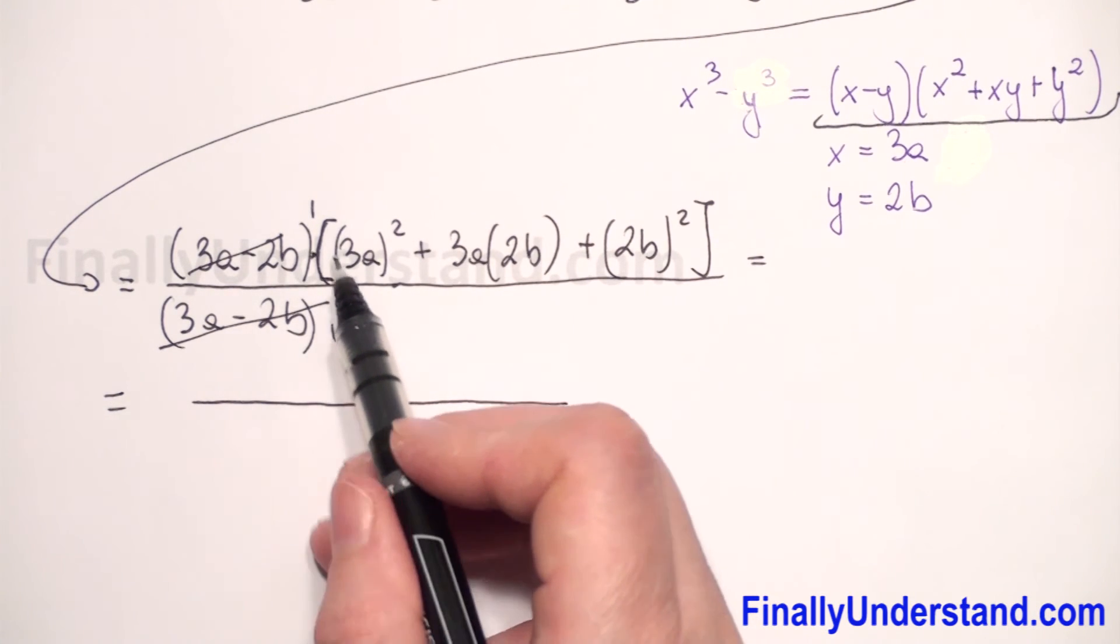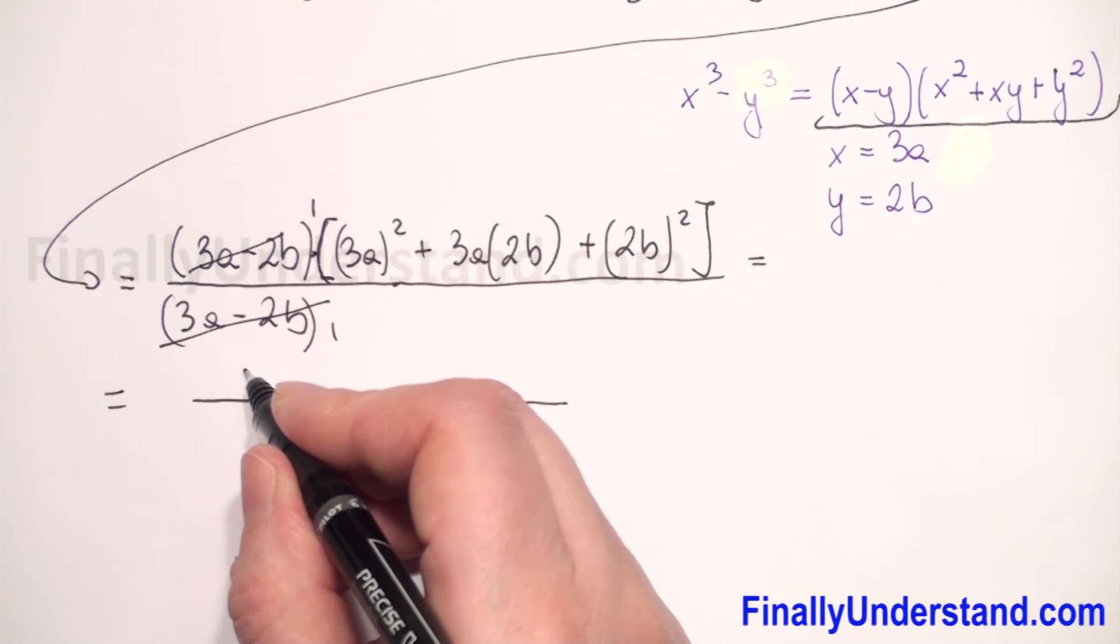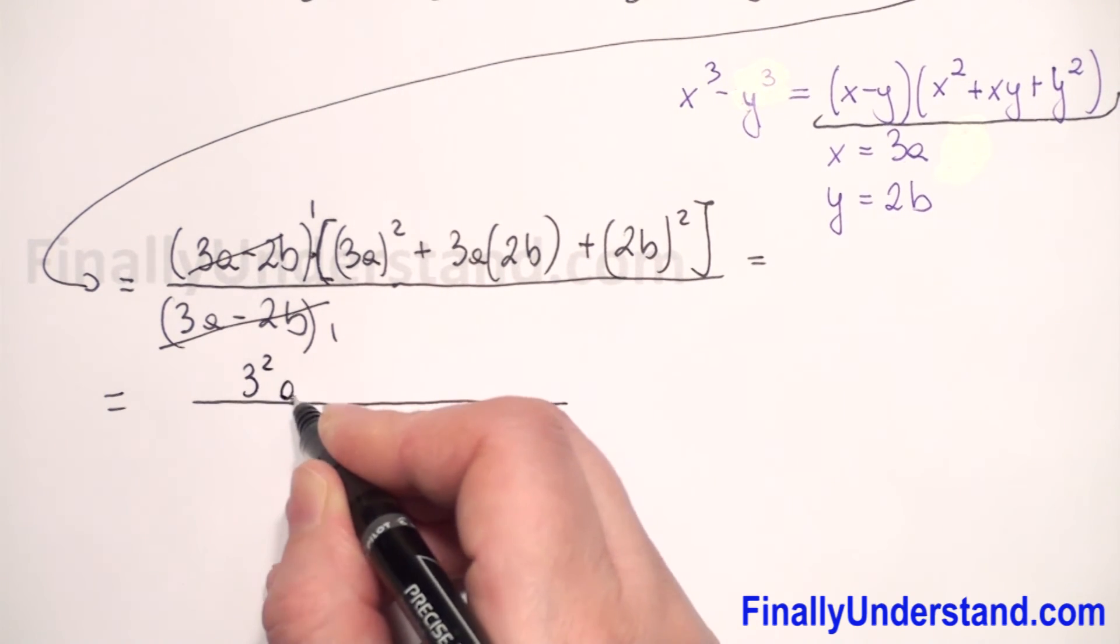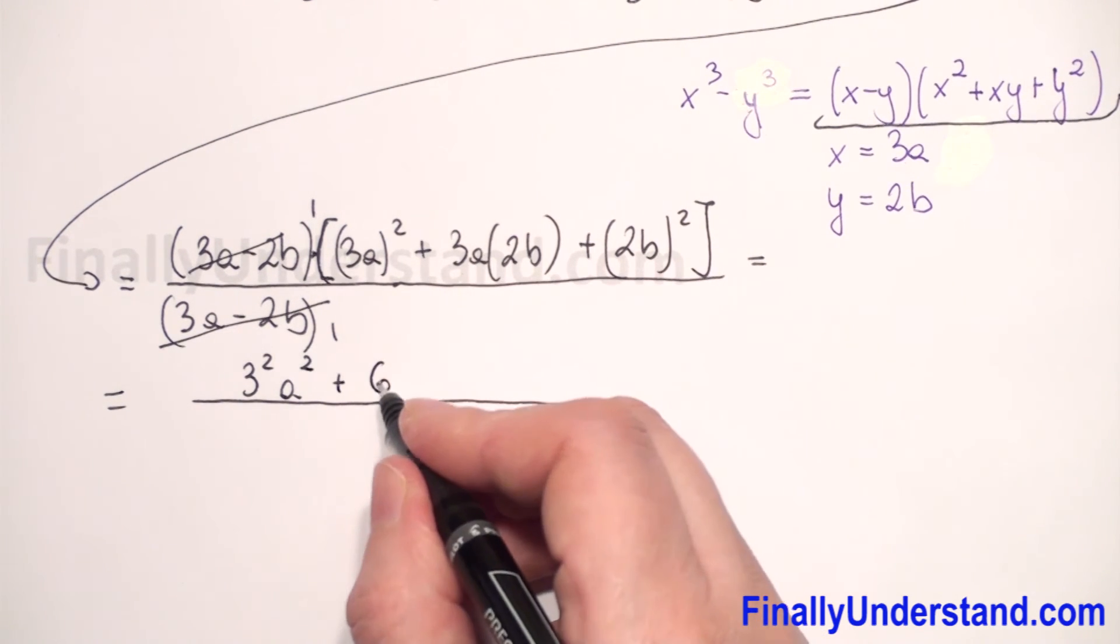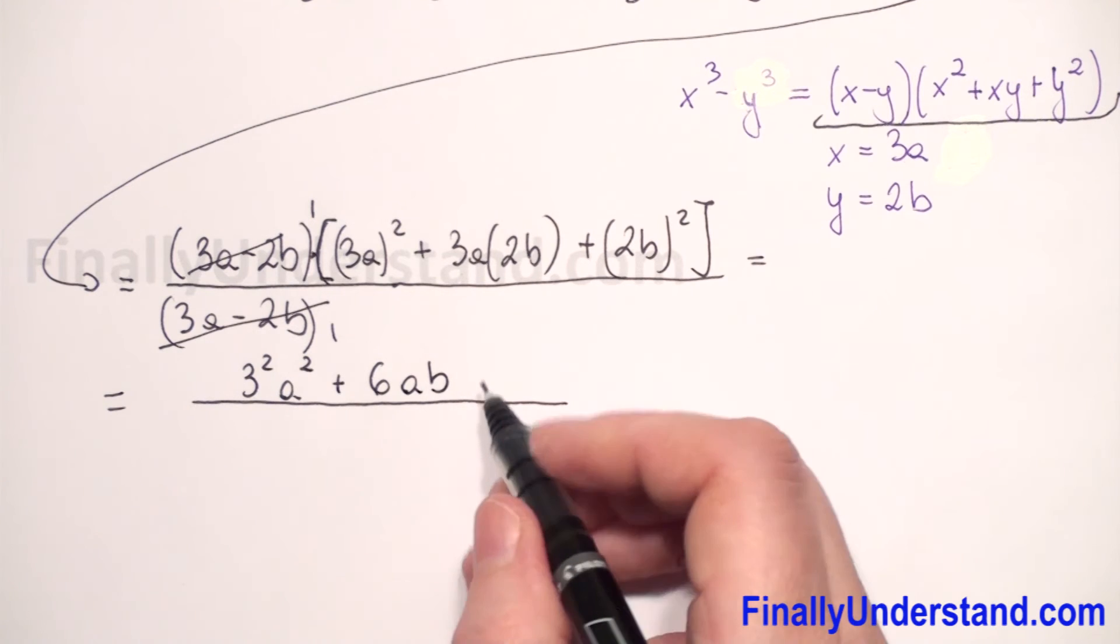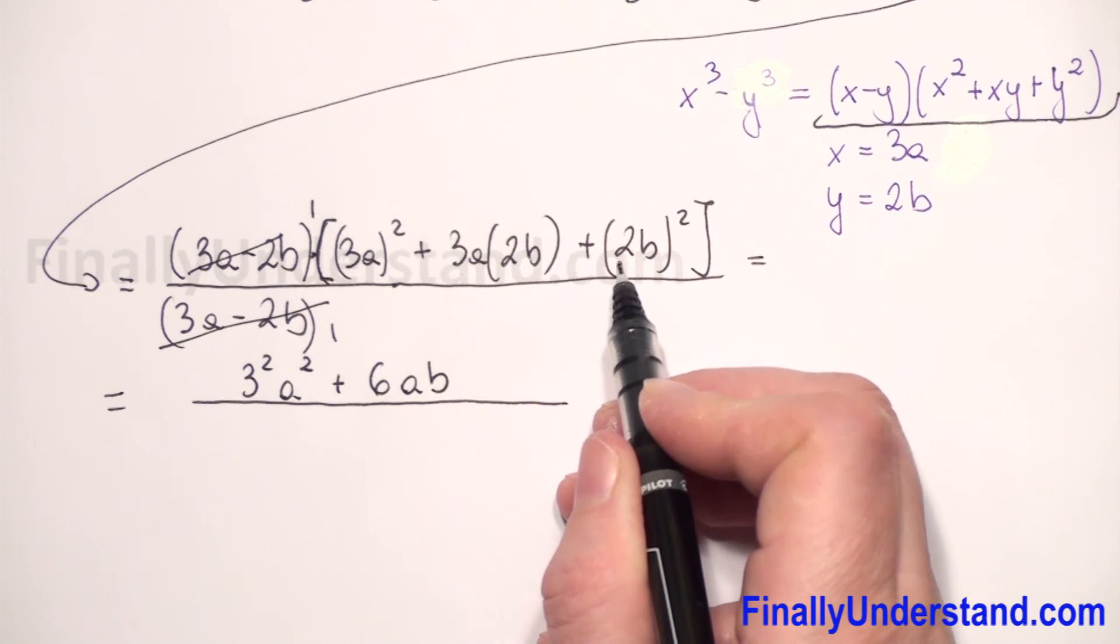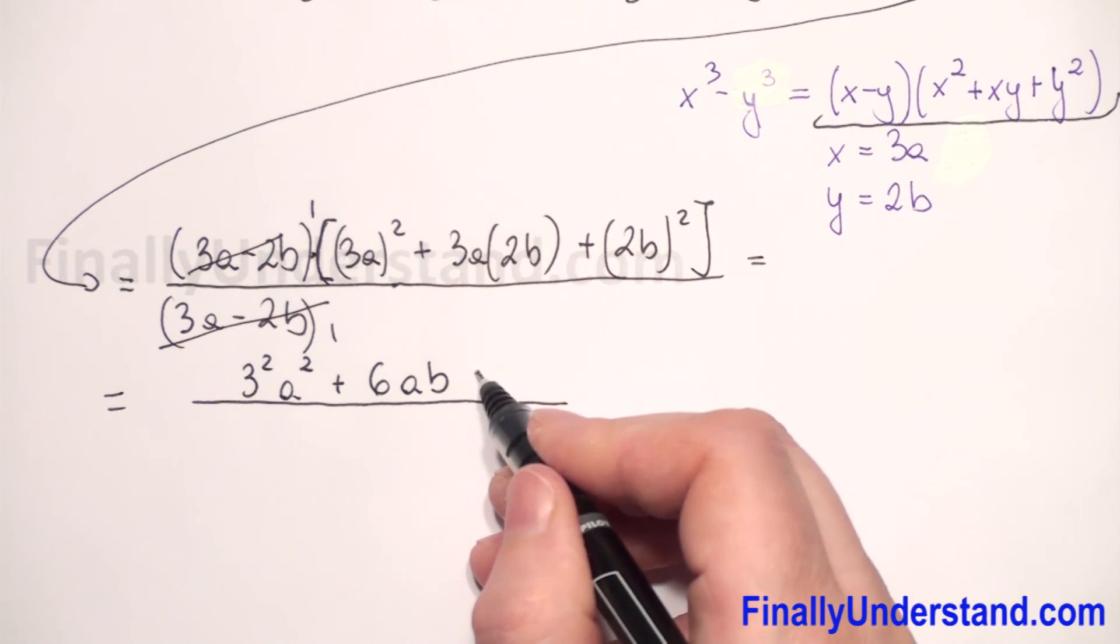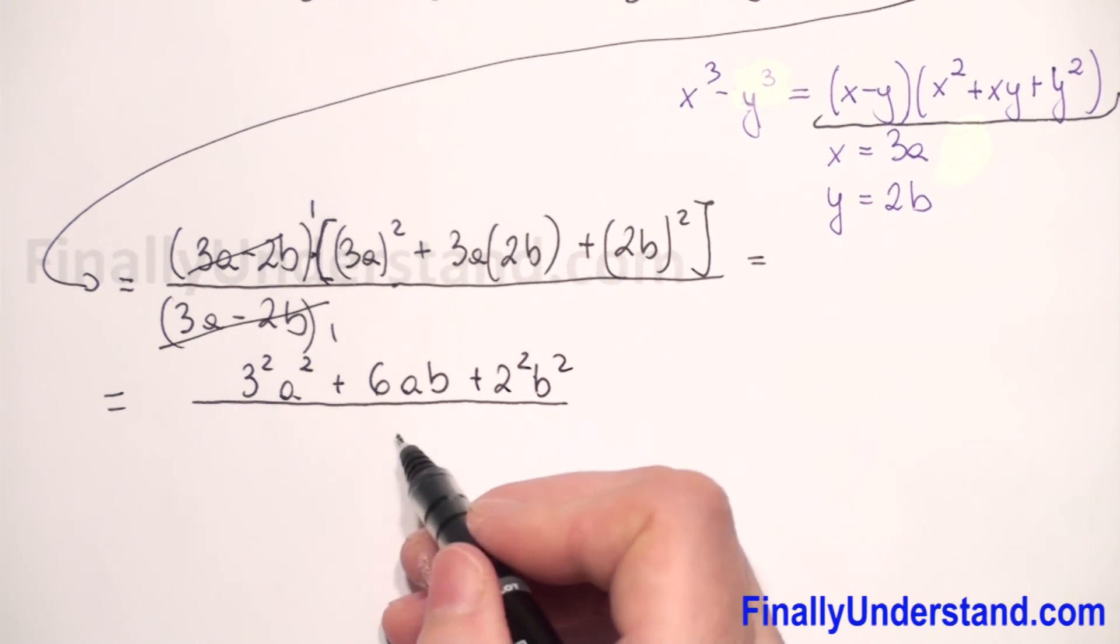And now we don't have to write these brackets, we have 3a to 2nd power, so we have to take to 2nd power 3 and a to 2nd power plus 3 times 2 is 6 and ab we have to rewrite. And now we have to take to 2nd power 2b, so 2 to 2nd power and b to 2nd power.